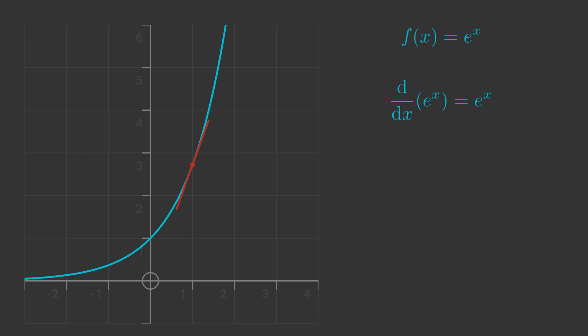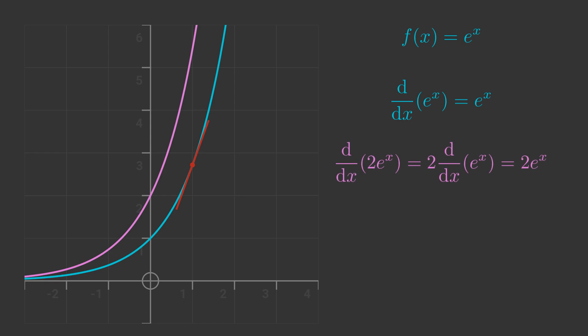The exponential curve isn't the only curve with this property. For example, 2 times e to the x has the same property. d by dx of 2 e to the x is equal to 2 times d by dx of e to the x, and since d by dx of e to the x is e to the x, it follows that d by dx of 2 e to the x is 2 e to the x. In fact, there are a whole family of curves with this property. e to the x multiplied by any number has the property that it is its own derivative.